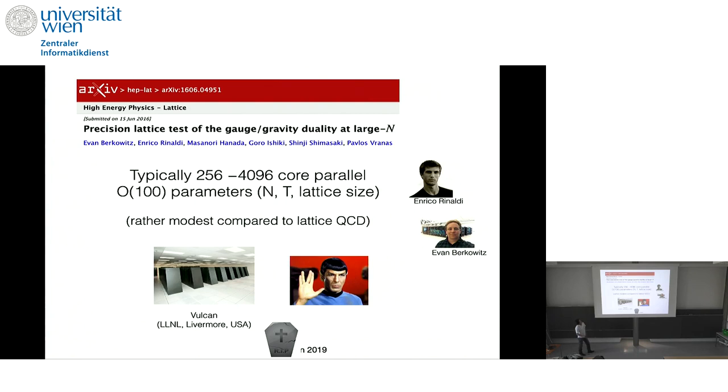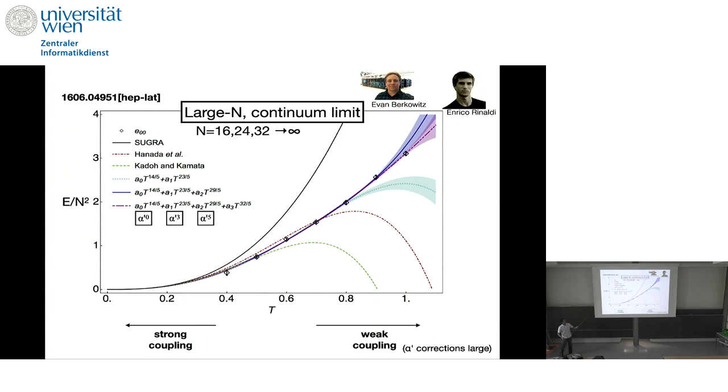And so the size of the job is like typically at the most 4,000 core parallel. But we have to study a lot of N and the temperature and the lattice size in order to take continuum limit, large N limit at each temperature. So it's much smaller than lattice QCD simulation, but still that's something we cannot do in a local cluster.